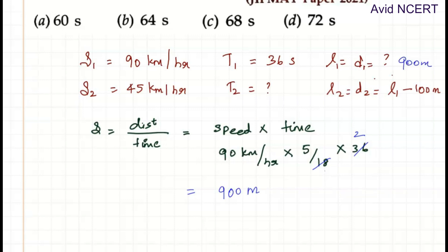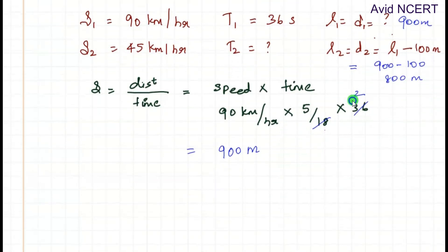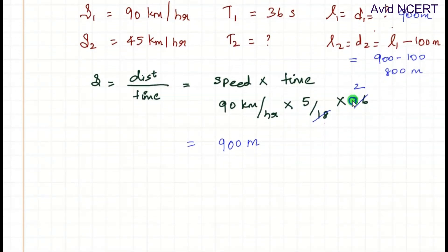Since we know the length of the first train, we can find the length of the second train, which is 900 minus 100 meters, which equals 800 meters. So now we have the data. With the second set of data, we can find the time.